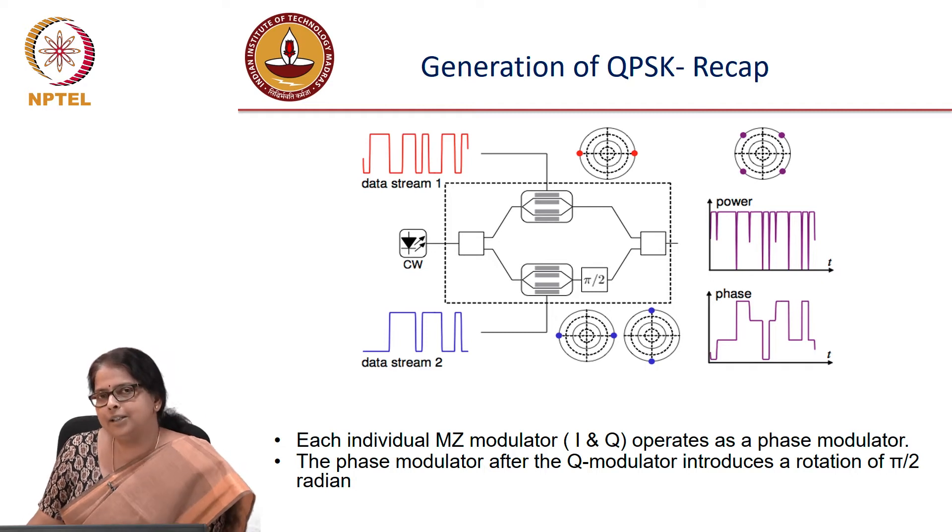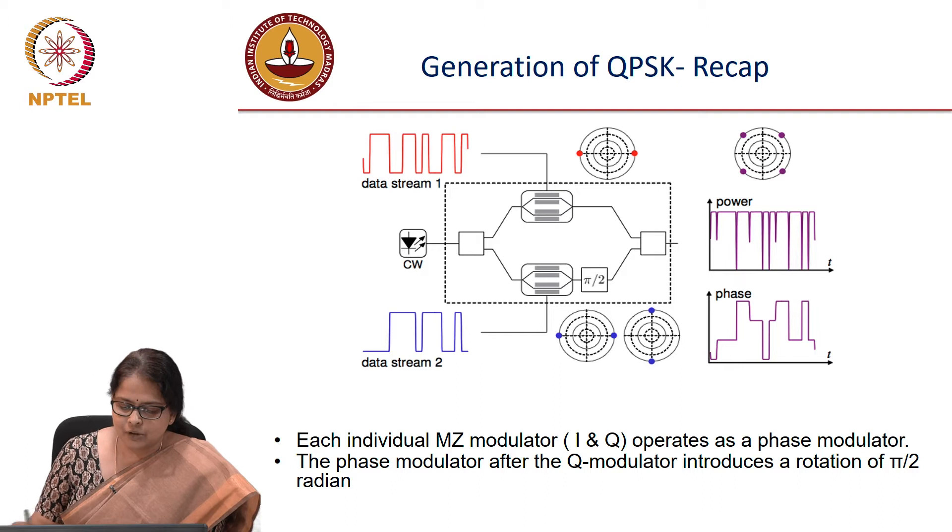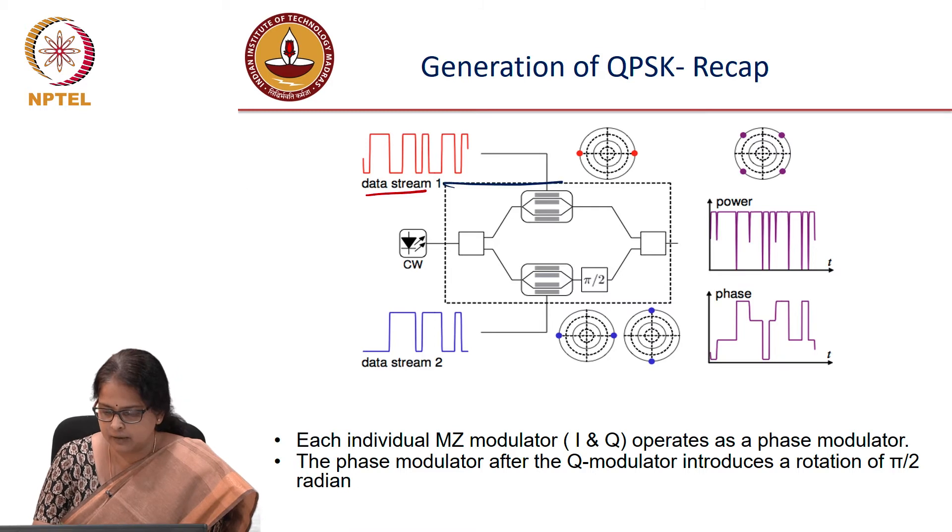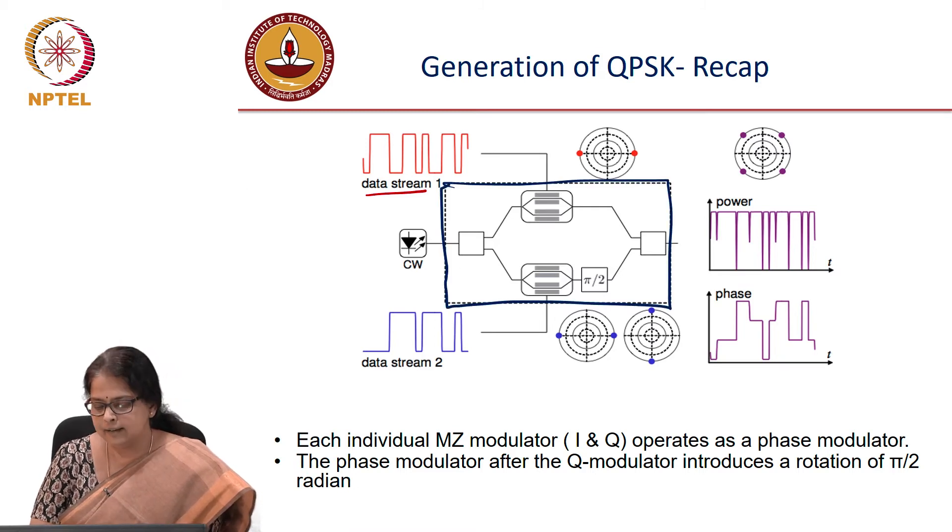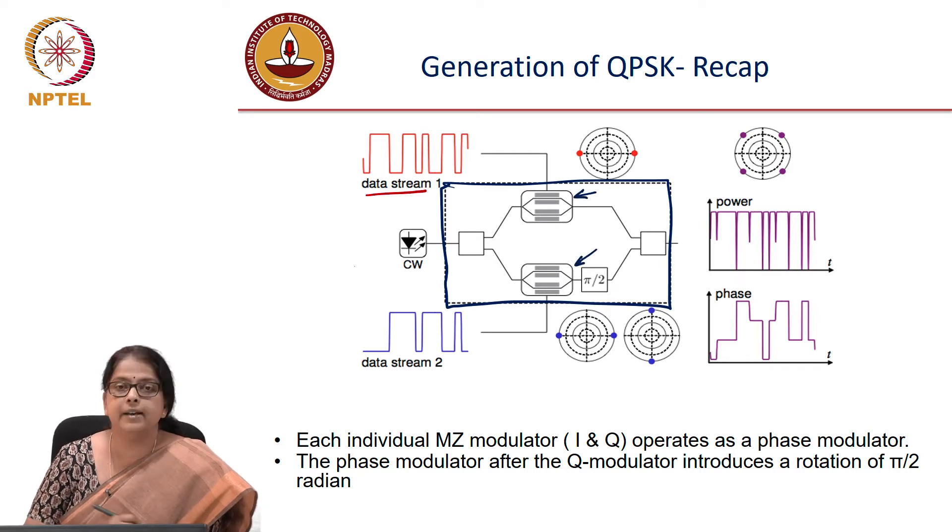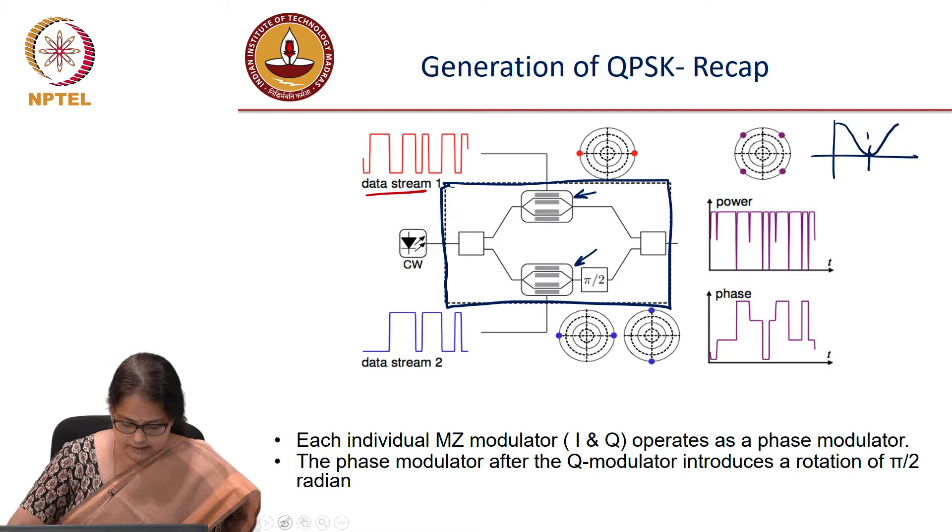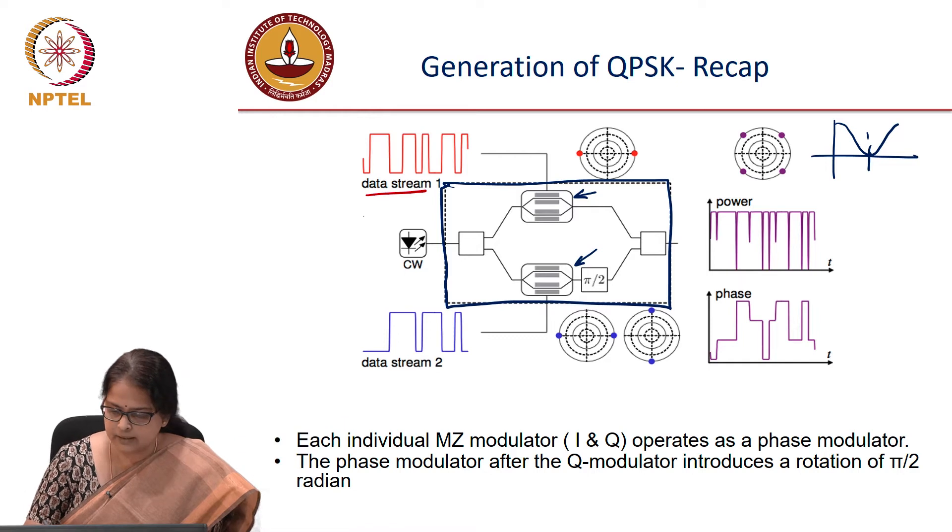This is the generation of QPSK data stream. You had a data stream 1 and what you see here is the picture of IQ modulator. We have discussed this in detail earlier. You had phase modulator 1 and phase modulator 2. These are nothing but Mach-Zehnder modulators and the operating point here is for each of these modulators is chosen as the null point.